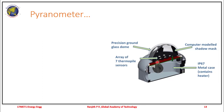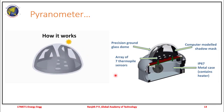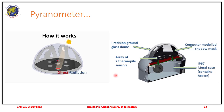The pyranometer has thermopile sensors arranged on a glass dome within an enclosure. Seven thermopiles in combination with the shape of the shadow mask ensure that one thermopile is always in the direct solar beam and one is in shade. At any given moment, at least one thermopile is measuring direct radiation and at least one is measuring diffuse radiation — that is how the total global radiation is measured.